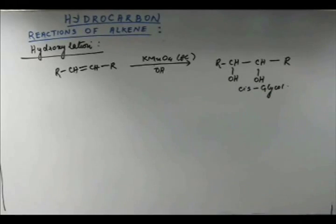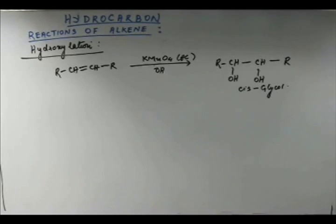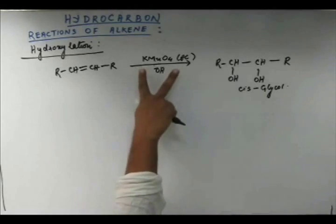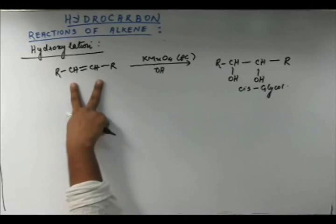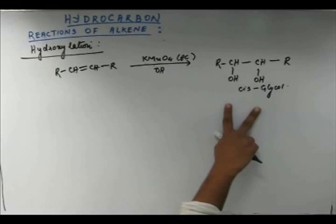Glycol is any compound having two hydroxy groups. If both hydroxy groups are on the same side of the plane, it is called a cis-glycol. For writing the product, you have to add a wedge bond on both carbons forming the pi bond in a cis orientation — that's how you get the product.